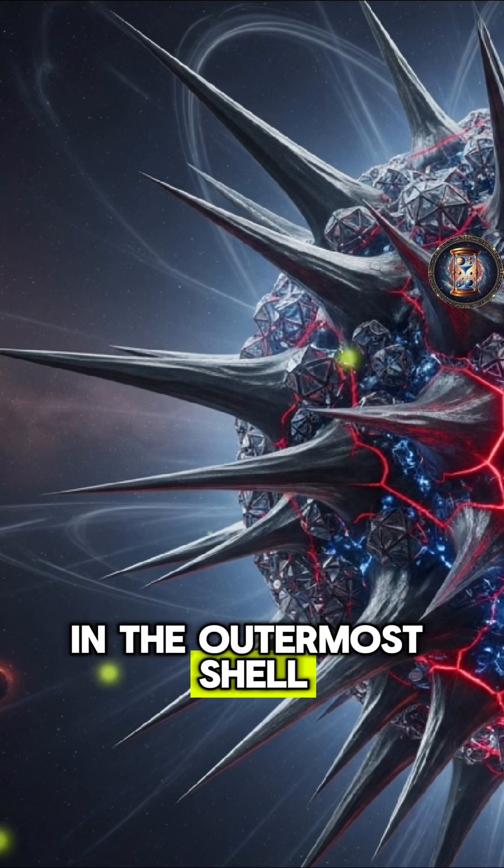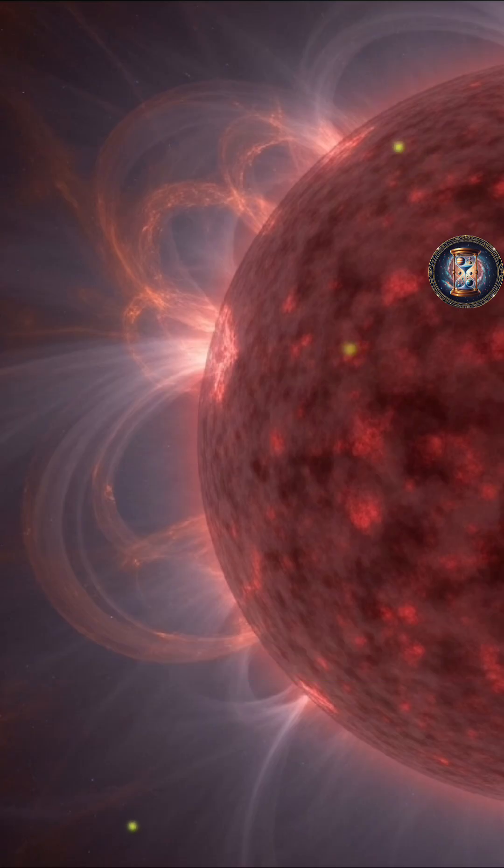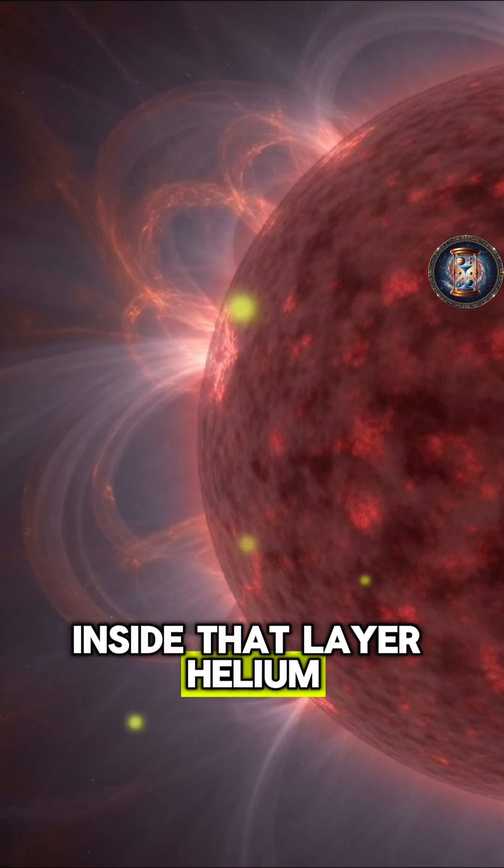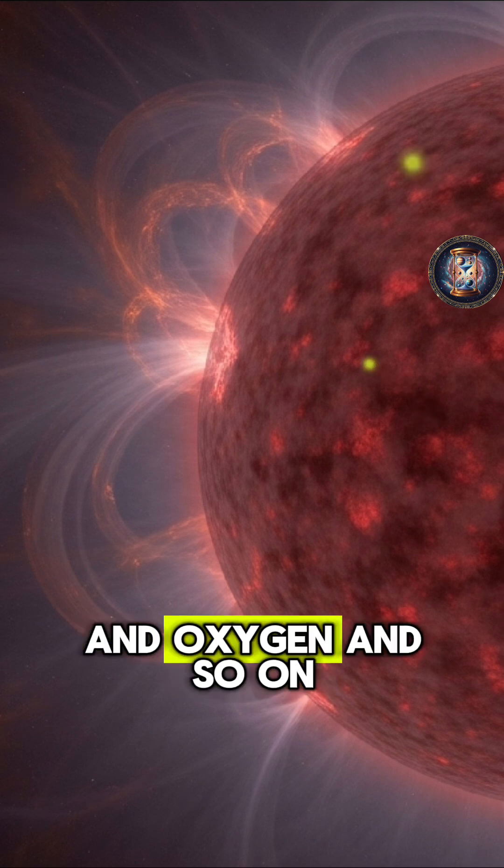In the outermost shell, hydrogen is still fused into helium. Inside that layer, helium is fused into carbon and oxygen.